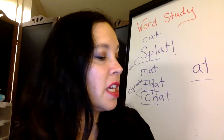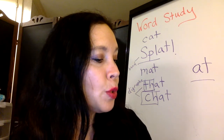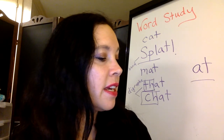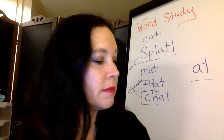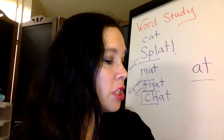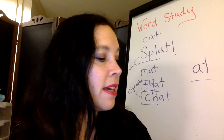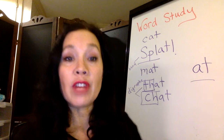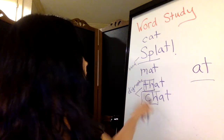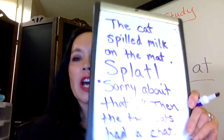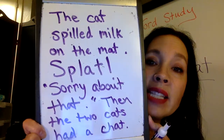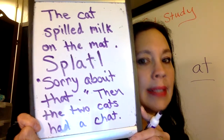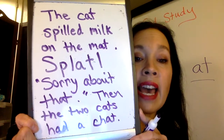Then the two cats had — oops, I put 'hat,' H-A-T. Let me change it. Had a chat. So we have another digraph — the C-H digraph in 'chat.' The cat spilled milk on the mat. Splat! Sorry about that. Then the two cats had a chat.